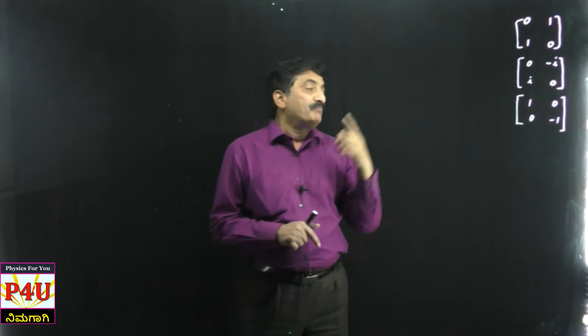Coming back to this - this is Pauli's first matrix, second matrix, third matrix. Pauli called the first as sigma x, so I call it X. Sigma y, I call it Y. Sigma z, I call it Z. X matrix, Y matrix, Z matrix.